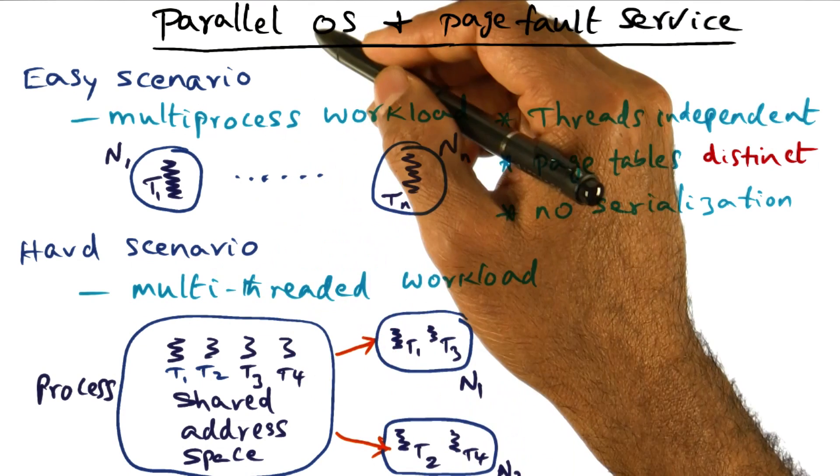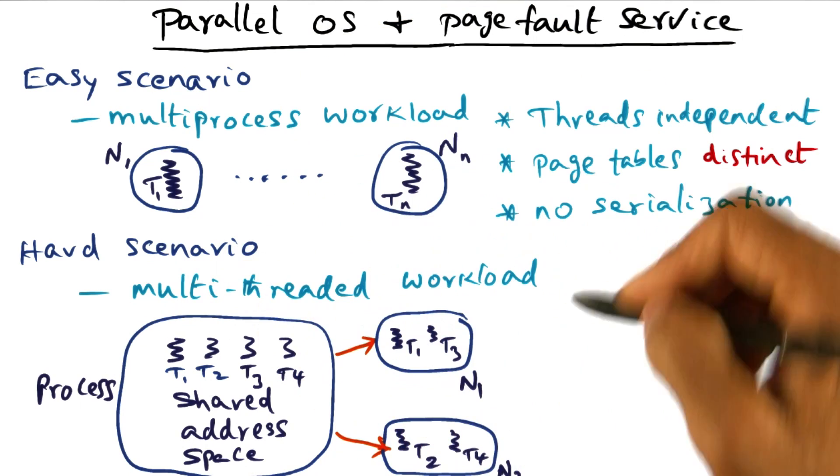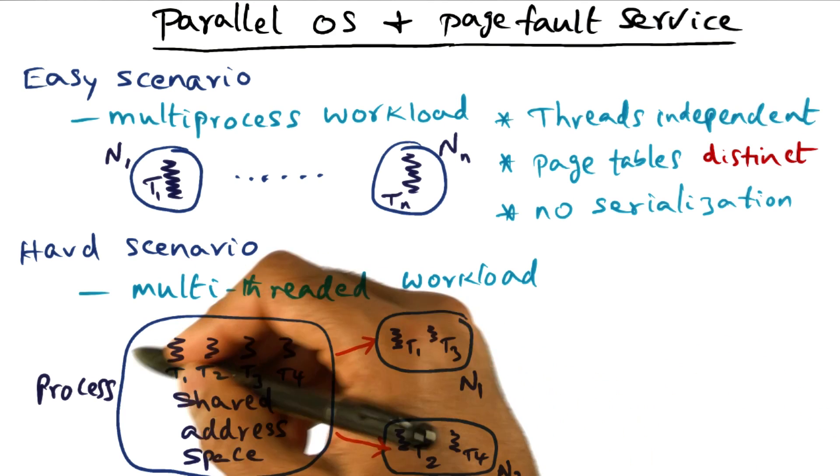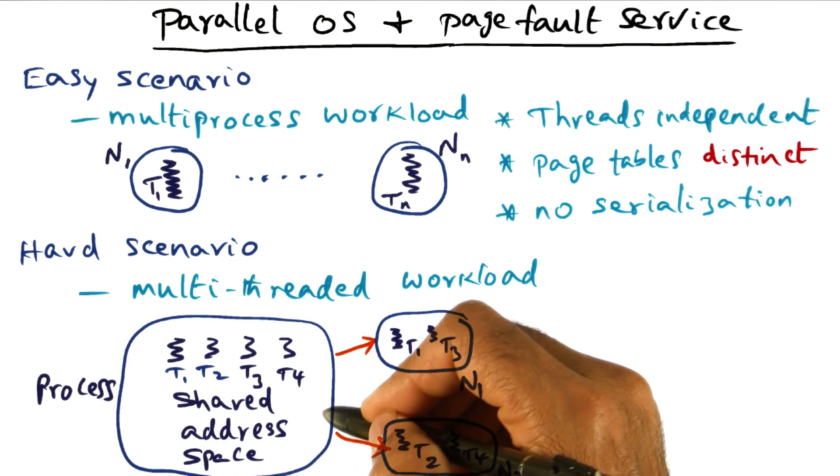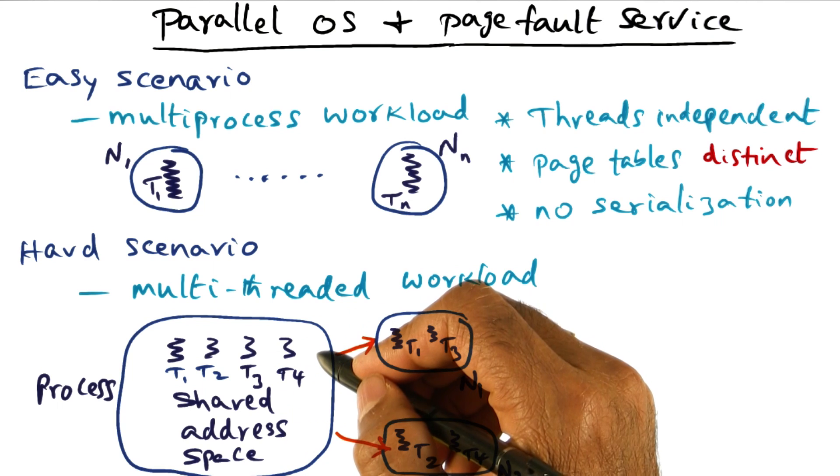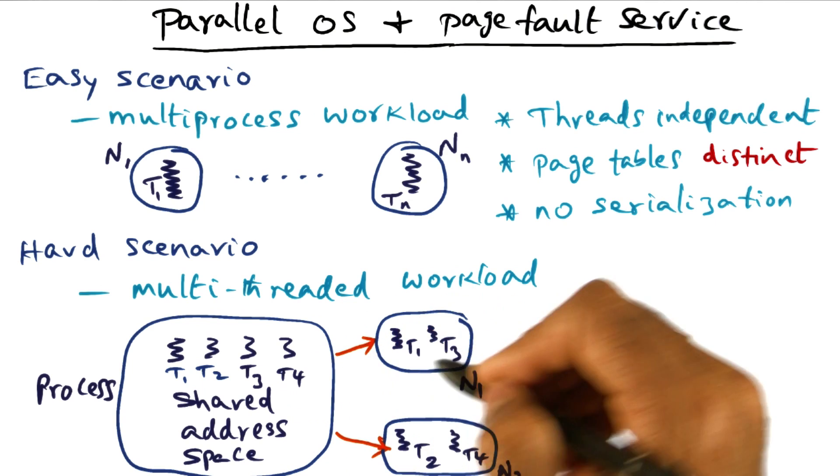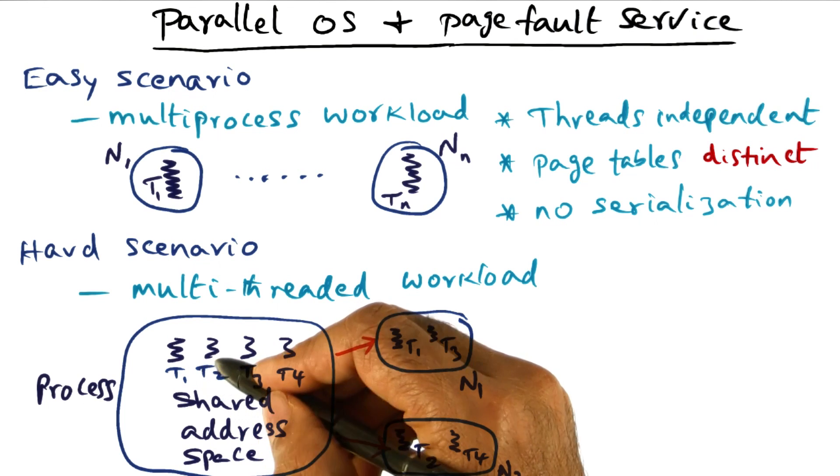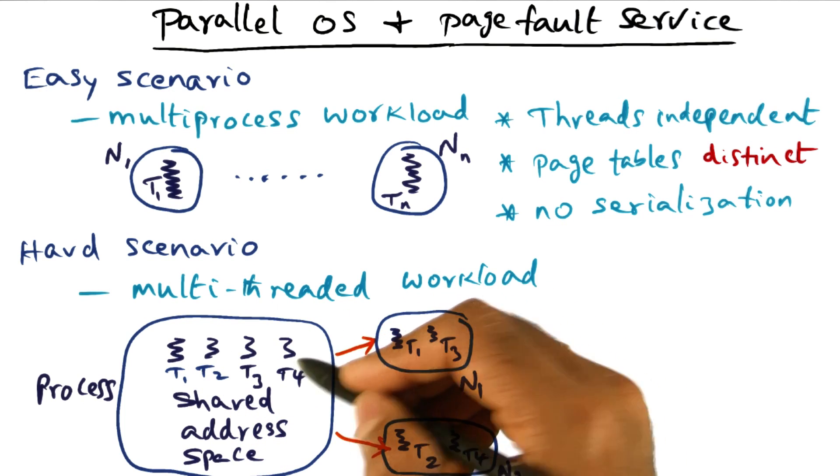The hard scenario for a parallel operating system is a multi-threaded workload. What we mean by a multi-threaded workload is that you have a process with multiple threads. There is opportunity for exploiting the concurrency available in the multiprocessor by scheduling these threads on different nodes of the multiprocessor.